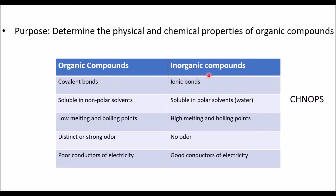An inorganic compound is typically a chemical compound that lacks a carbon-to-hydrogen bond, meaning a compound that is not an organic compound. This table represents the differences between organic and inorganic compounds.